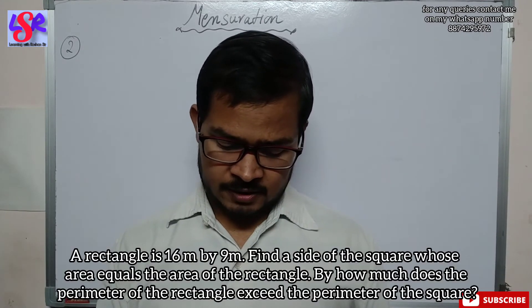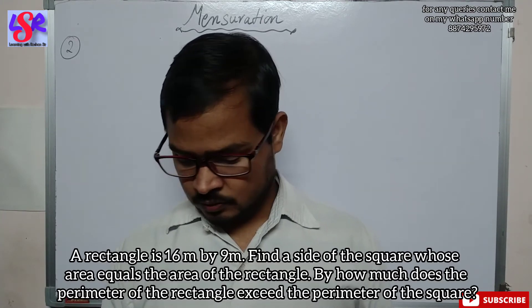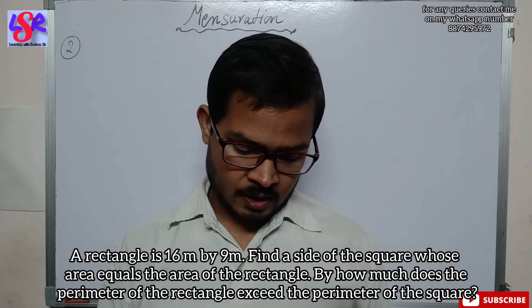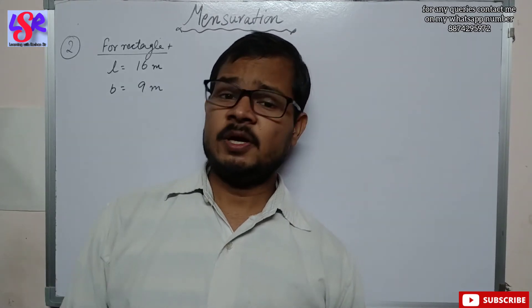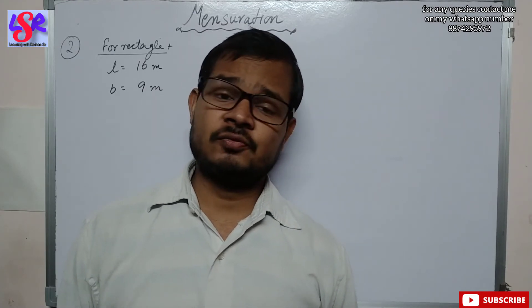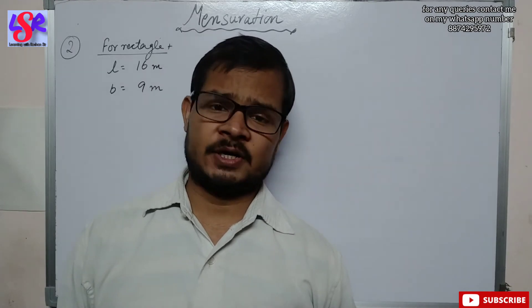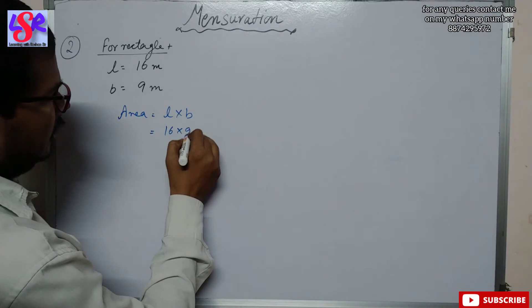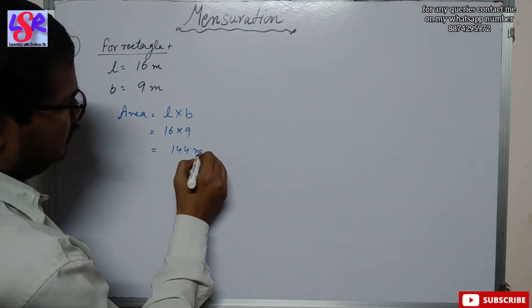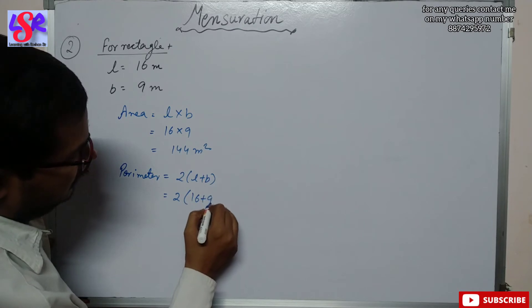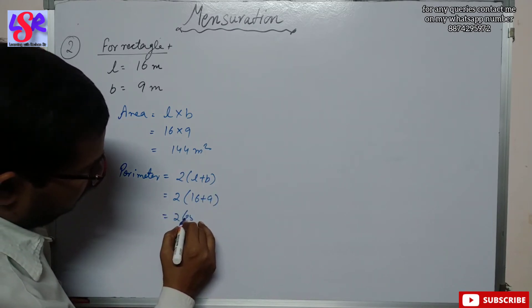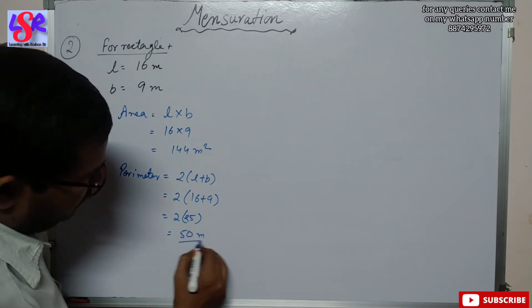Question 2: A rectangle is 16 meters by 9 meters. Find the side of a square whose area equals the area of the rectangle, and by how much does the perimeter of the rectangle exceed the perimeter of the square? Area of rectangle equals 16 into 9 equals 144 square meters. Perimeter of rectangle equals 2(16 + 9) equals 2 into 25 equals 50 meters.